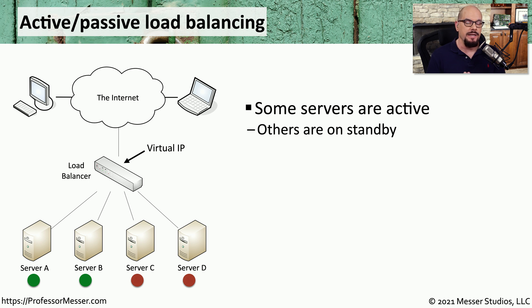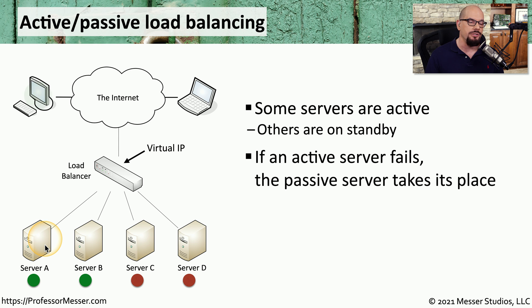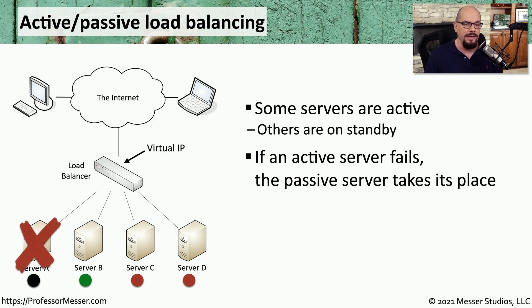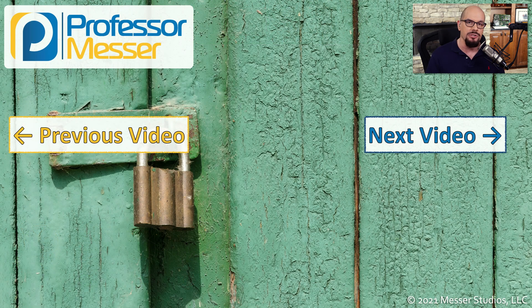The load balancer might also be set up in an active-passive mode, where some servers are actively in use and other servers are on standby. If one of the active servers fails, the standby devices can suddenly move into active mode and begin providing services through the load balancer. For example, a user communicates through the load balancer to server A. If server A is no longer available due to a failure, a standby server like server C can turn itself on and start providing services. The next time that user communicates through the load balancer, they'll automatically be assigned to server C instead of the unavailable server A.